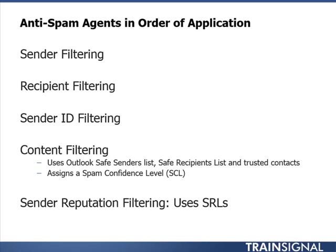The SRL is a number between 0 and 9: 0 indicates no chance the sender is a spammer, 9 indicates they definitely are. Depending on the level you configure, that determines whether the sender is viewed as spam. Behind the scenes, Sender Reputation involves open proxy testing, HELO and EHLO analysis, reverse DNS lookups, and SCL ratings analysis of individual sender messages — all combining to determine the sender's reputation and ultimately the SRL.